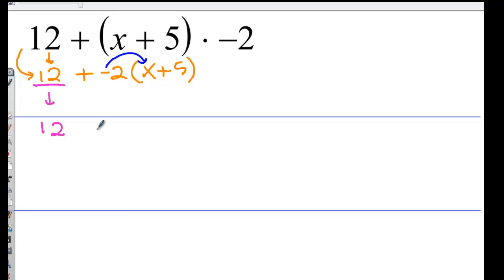Then we do this. Negative 2 times x is negative 2x. Negative 2 times positive 5 is negative 10. Then you put whatever is the same together. So this has no variable. This has an x, so they're not the same. This has no variable. So we have 12 minus 10, that's 2. And this right here, negative 2x.